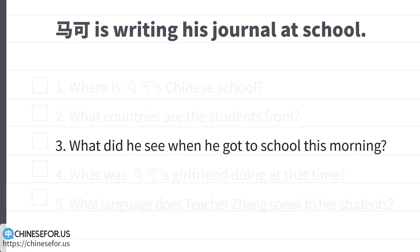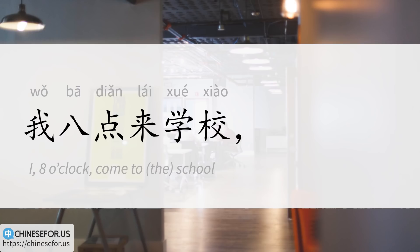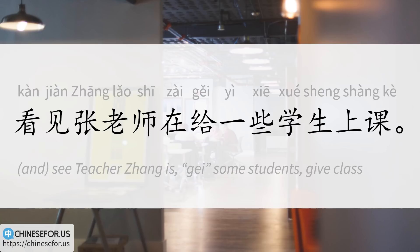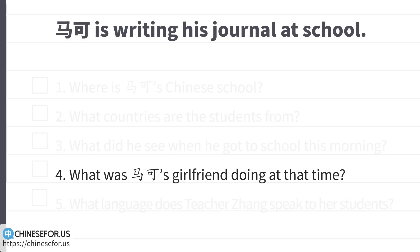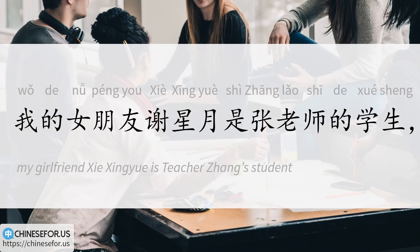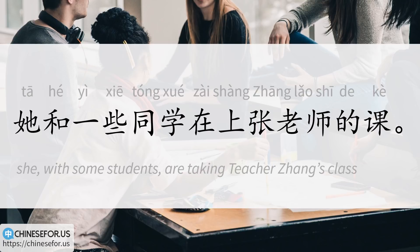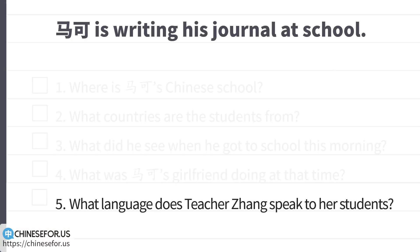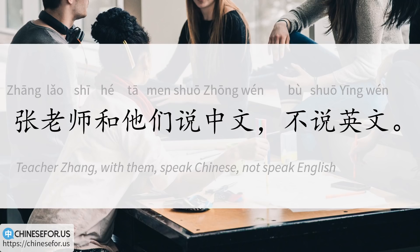Number three: What did he see when he got to school this morning? 我八点来学校。看见张老师在给一些学生上课。He saw 张老师, teacher Zhang, giving class to some students. Number four: What was Ma Ke's girlfriend doing at that time? 我的女朋友谢兴月是张老师的学生。他和一些同学在上张老师的课。She was taking teacher Zhang's class with some classmates. Number five: What language does teacher Zhang speak to her students? 张老师和他们说中文，不说英文。She speaks to them in Chinese, not in English.